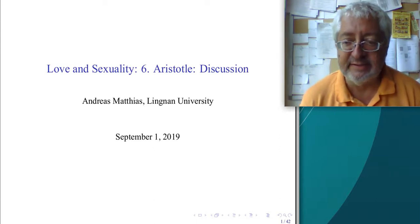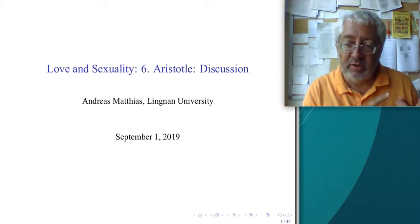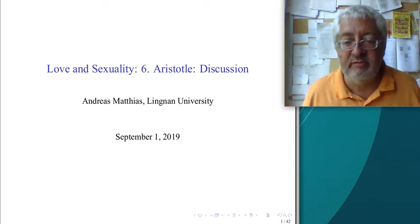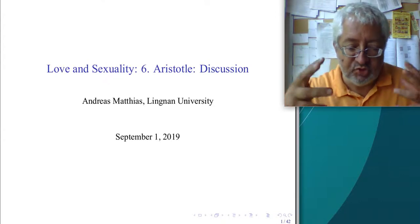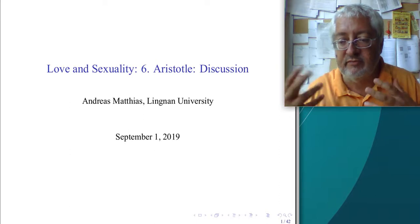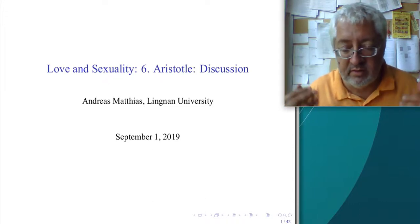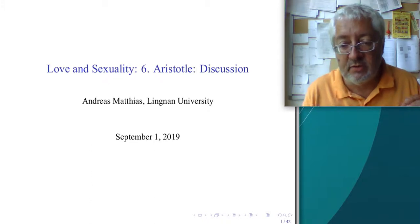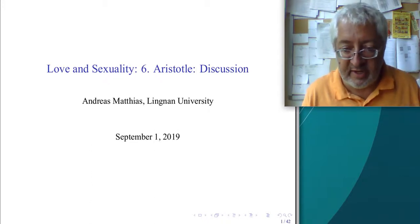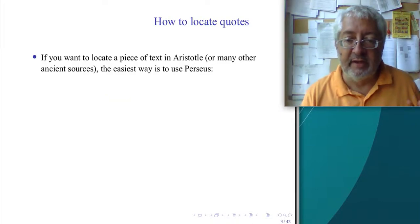Welcome again. Here we are in our sixth lecture on love and sexuality, and today we will talk about Aristotle. We talked about Aristotle in a previous lecture where we had a more general overview of what Aristotle wants and how his Nicomachean Ethics generally sees the relationship between virtues and phronesis and eudaimonia. So if you have not seen the previous part, you should, because without that you will not understand this. Today we want to talk specifically about Aristotle's theory of love and friendship.